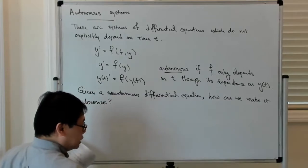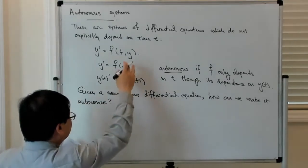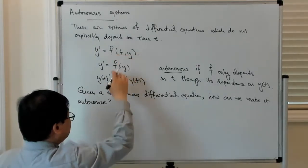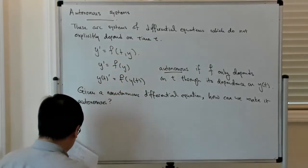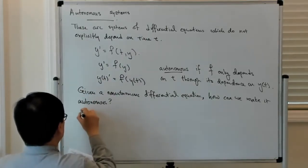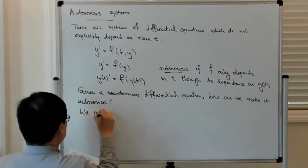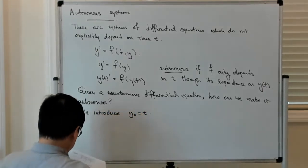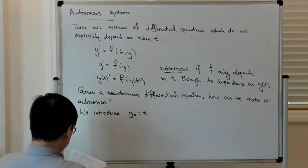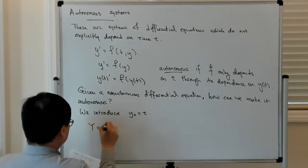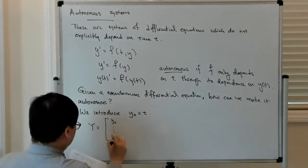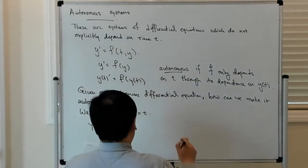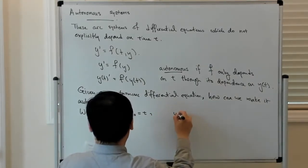Given a non-autonomous differential equation, how can we make it autonomous? The basic idea is that you augment the right-hand side. If you have a new right-hand side which includes t, then by definition it's no longer autonomous. So we introduce y0 equal to t.